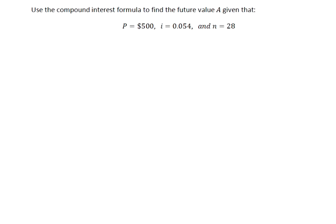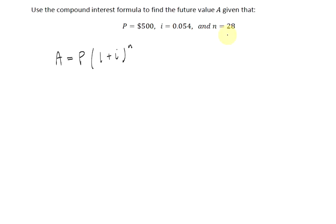Let's do our first example. Use the compound interest formula to find the future value A given that P equals $500, I equals 0.054, and N equals 28. The first thing we need to do is determine the formula to use — in this case the compound interest formula. Notice that the values for I and N are stated explicitly, so we can use those numbers in our formula as is.